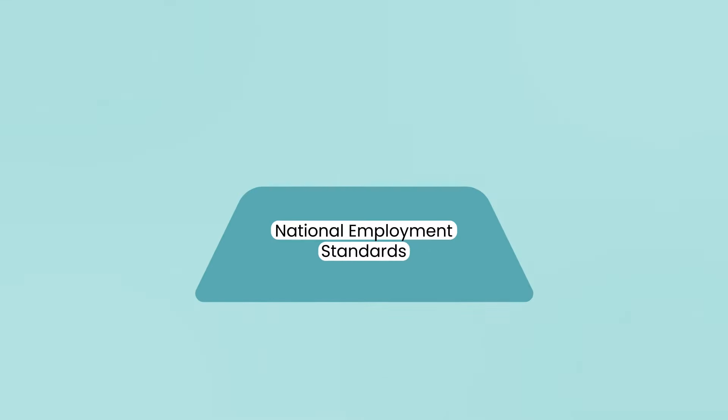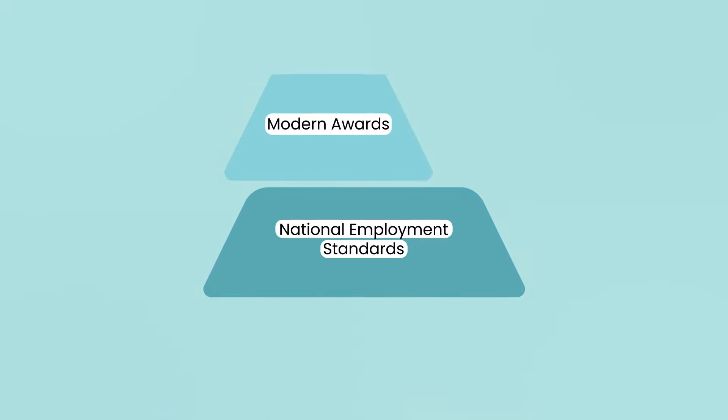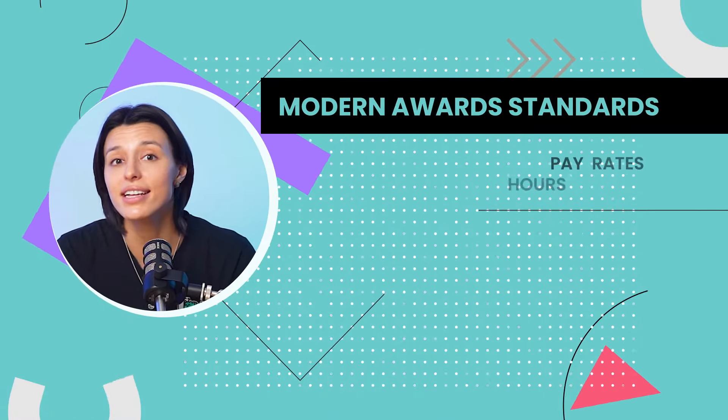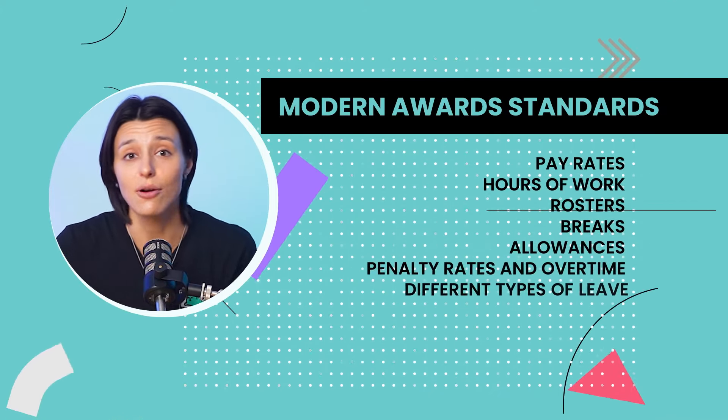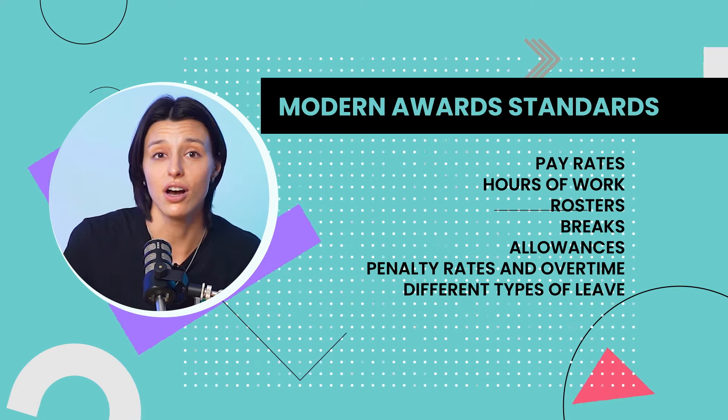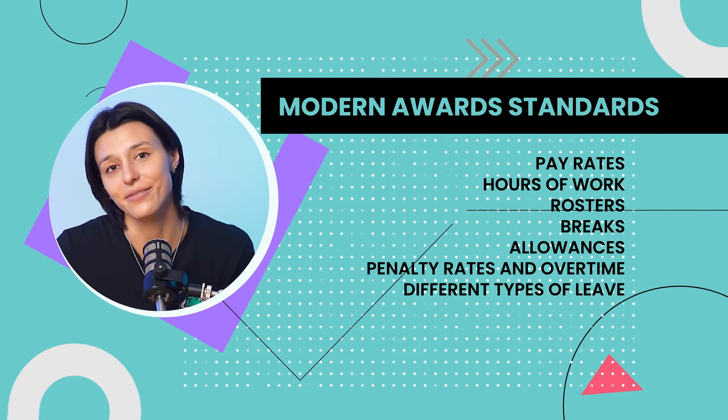Now let's move on to modern awards. If you think of the NES as the foundation, modern awards are the next level up. They build on top of the NES to give employees in specific industries or occupations additional minimum entitlements. There are more than 120 modern awards that cover most people working in Australia. They set minimum standards for things like pay rates, hours of work, rosters, breaks, allowances, penalty rates and overtime, and different types of leave.